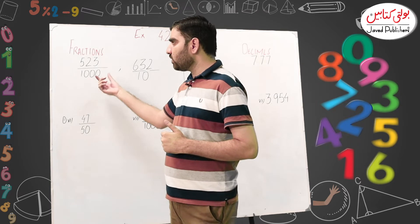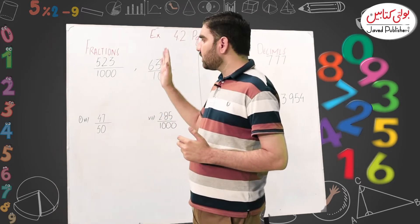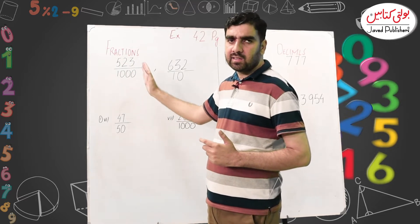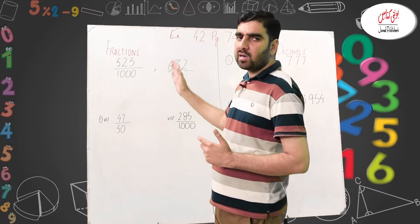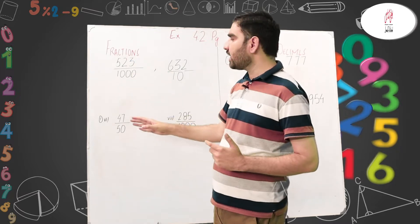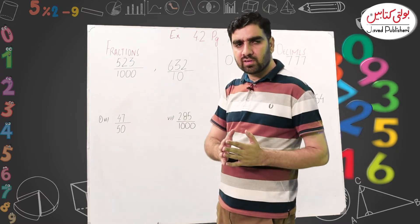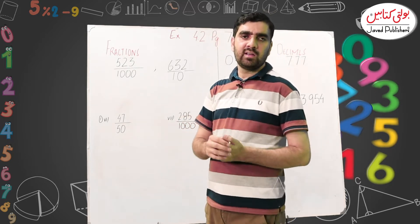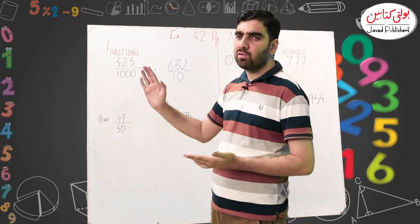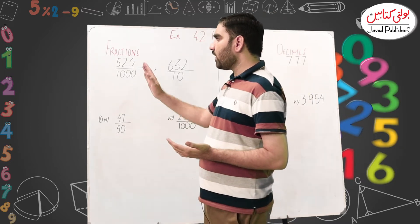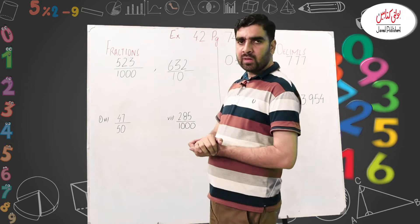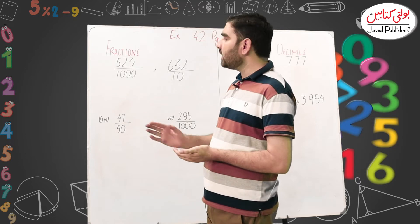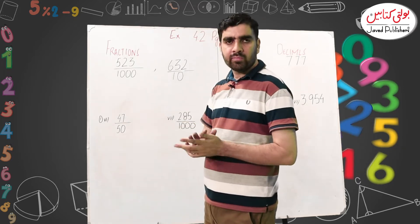If there is a denominator of 1000, then the decimal point will move three digits from right to left — because there are three zeros. If there are two zeros, then two digits move. If there is one zero, or the denominator is 10, then one digit moves.